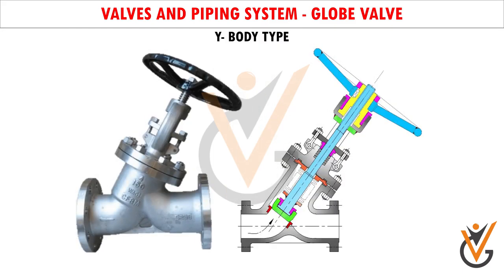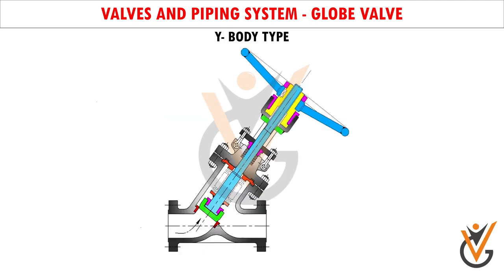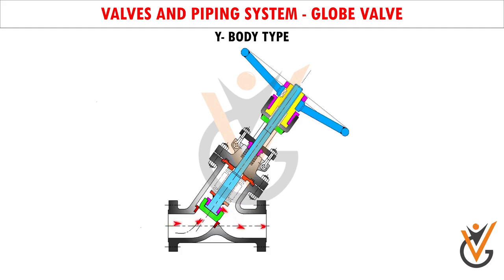Y-body type: The Y-body type valve design is a solution to the problem of pressure drop which is commonly found in globe valves. In this design, the valve seat and stem are angled at approximately 45 degrees to the valve axis. This results in a much straighter path for the fluid flow, providing a more pressure-resistant environment inside the valve.